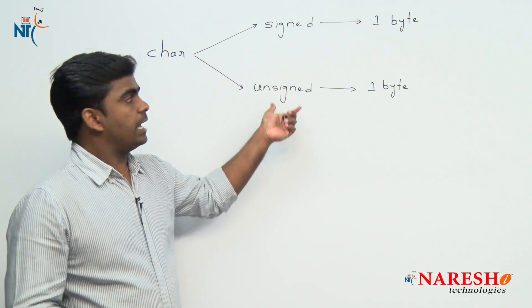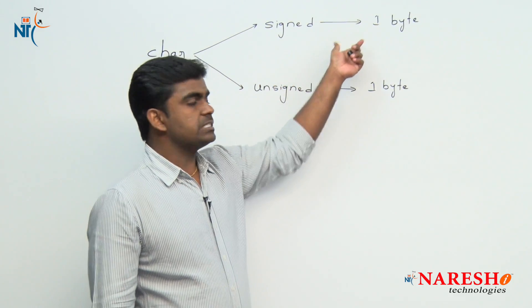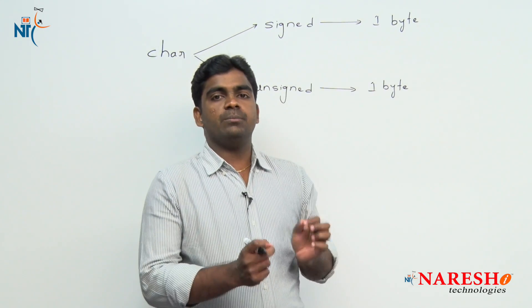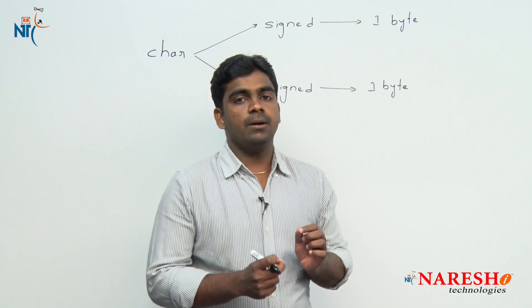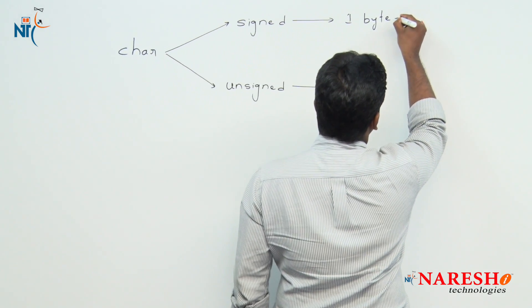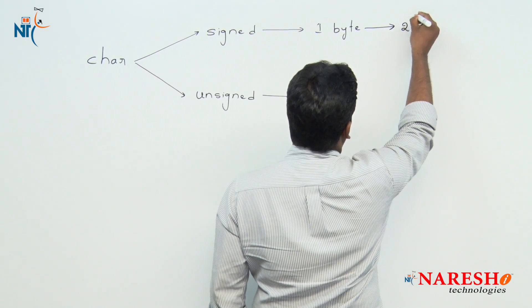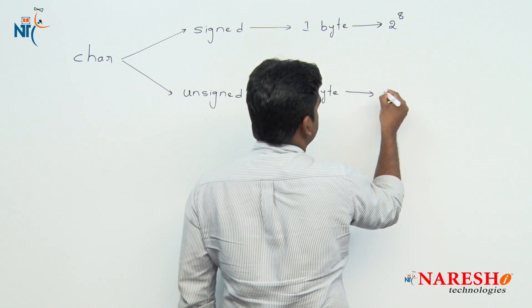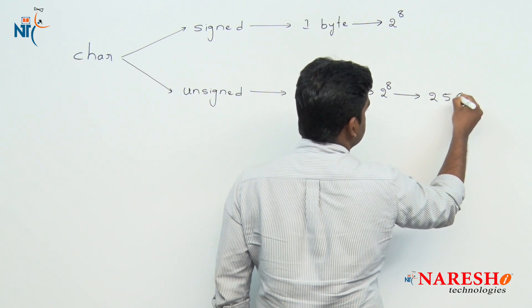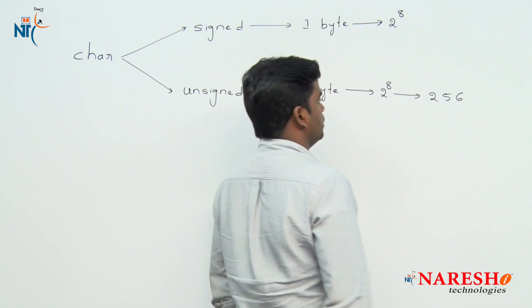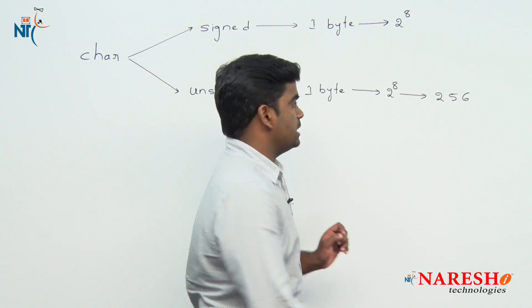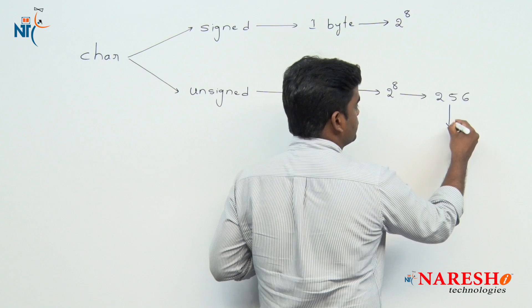Whatever the type, character occupies only one byte. Based on one byte, what is the minimum and maximum value we can store? One byte means we find the value of 2 power 8. The value of 2 power 8 is 256, and since positive values start from 0, the range for unsigned is 0 to 255.